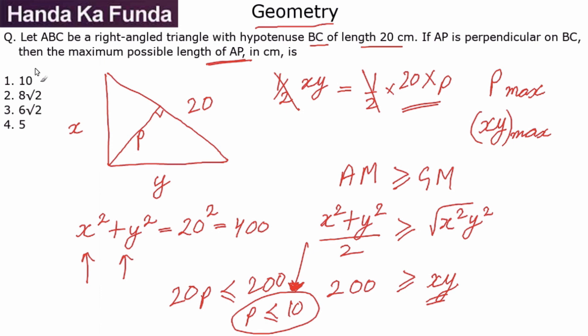So the maximum possible value is nothing else but 10. So to solve this question, if you want you can use the visualization, or you can also use this concept that arithmetic mean is always greater than or equal to the geometric mean of the values given. Hope you will be able to solve questions like this in the exam from now on.